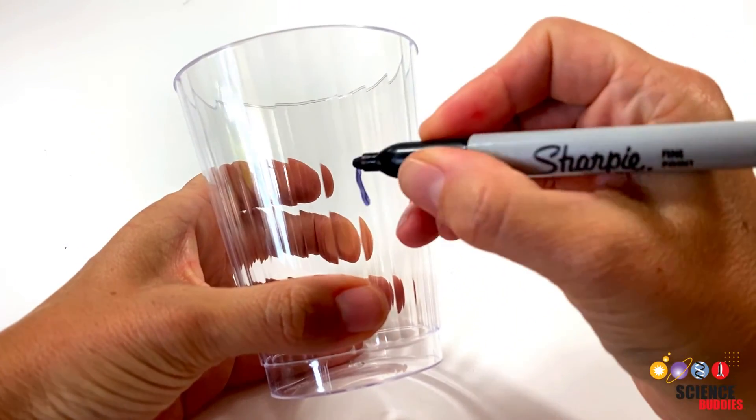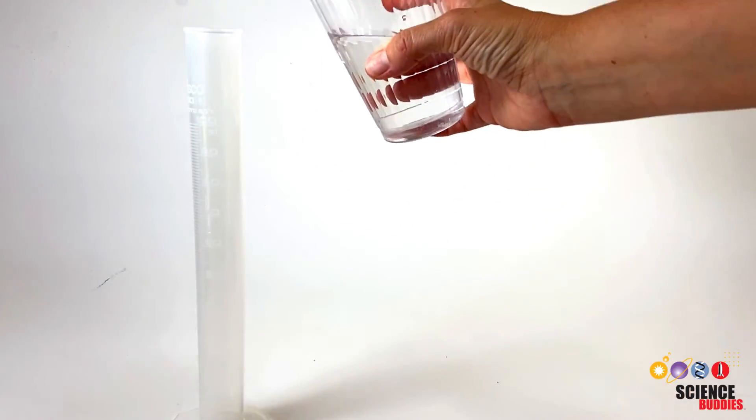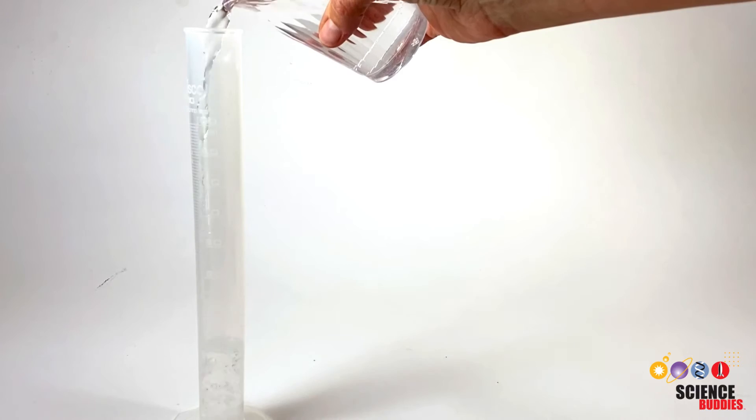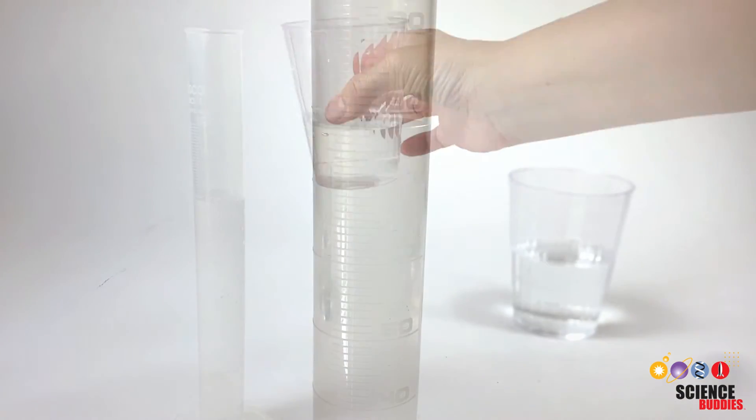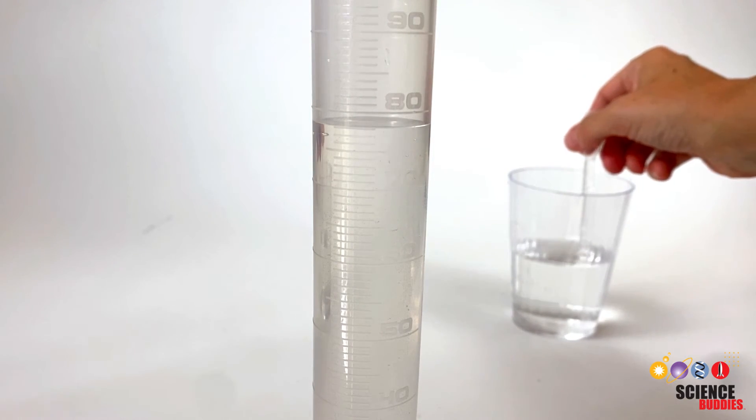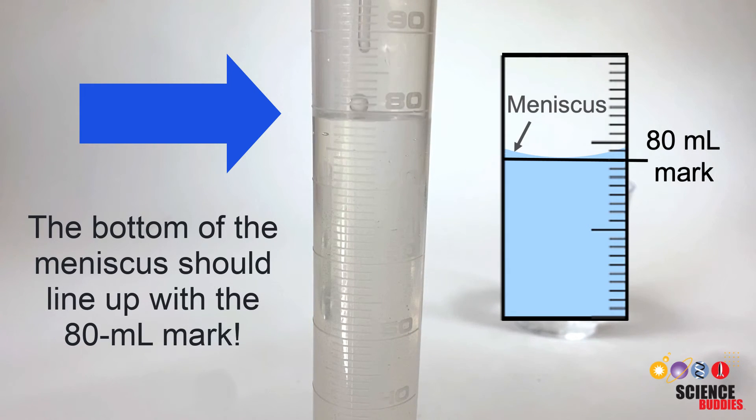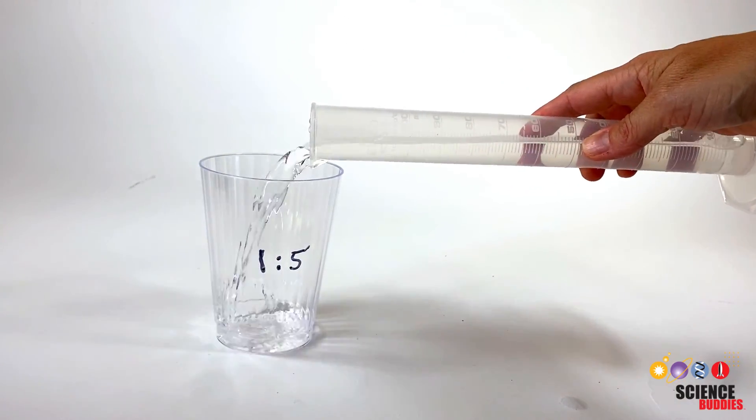First, we label our cup with the dilution we want to make. Then, we fill a graduated cylinder with 80 ml of water. To make our measurement as accurate as possible, we use a transfer pipette for the last couple of ml. The bottom of the meniscus should line up with the 80 ml mark. Now, we fill the water into our dilution cup.